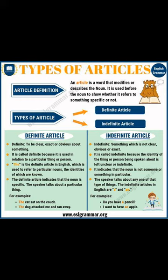An article is defined as a word that modifies or describes a noun. Adjectives are used before the noun to show whether it refers to something specific or not. In a way, articles can also be described as a type of adjective, as they also tell us something about the noun. There are two types of articles in the English language: indefinite articles — a, an — and the definite article — the.